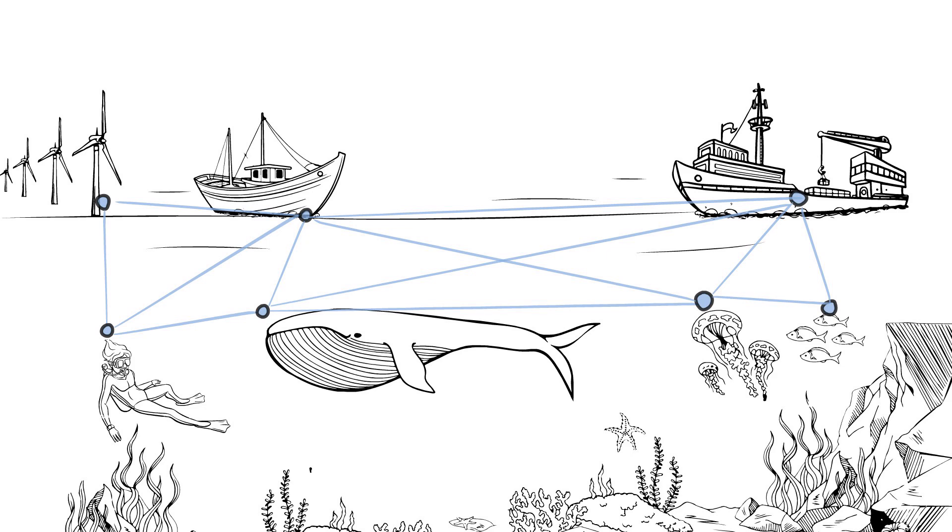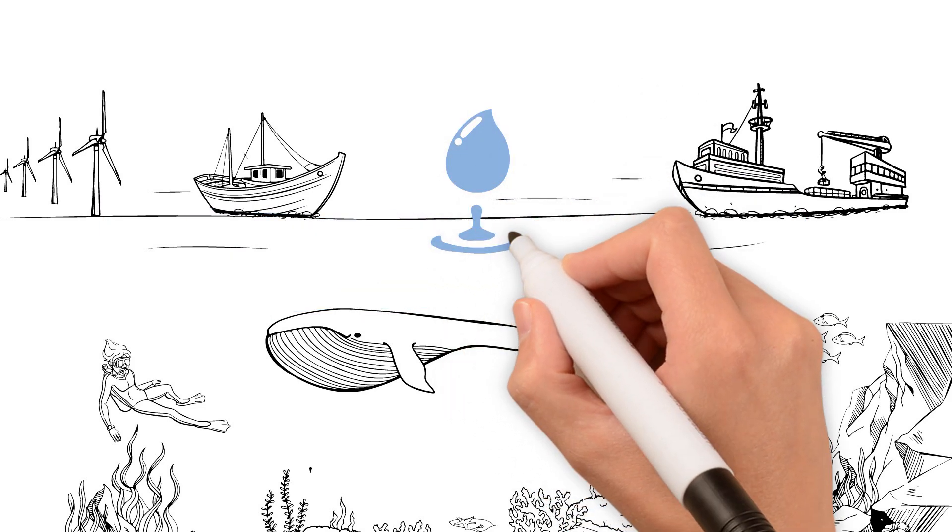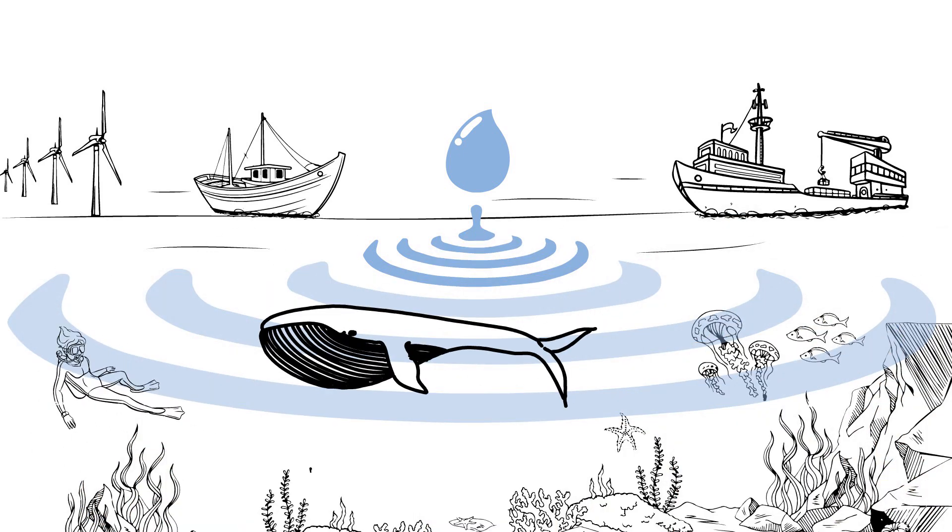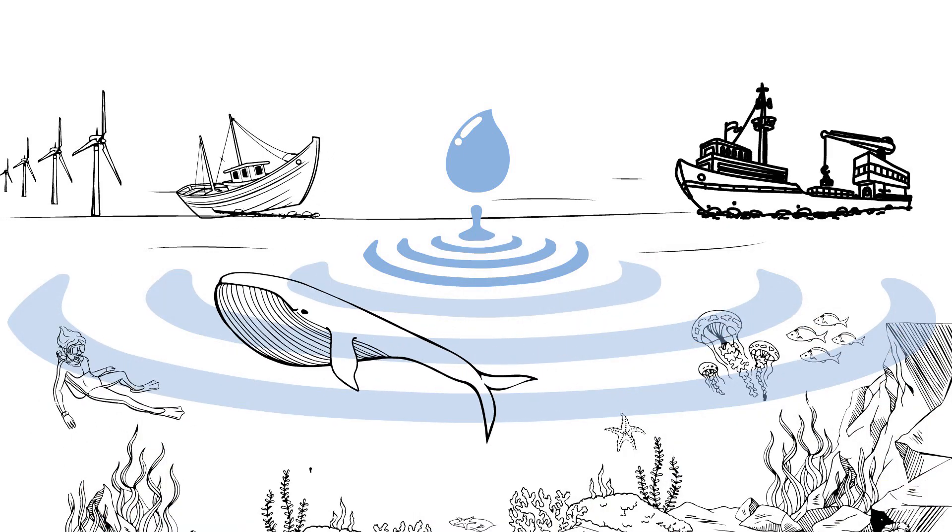But the truth is, they're all interconnected. Changes in one of these sectors can generate ripple effects across the entire ocean with diverse impacts on marine ecosystems, an intricate domino effect.